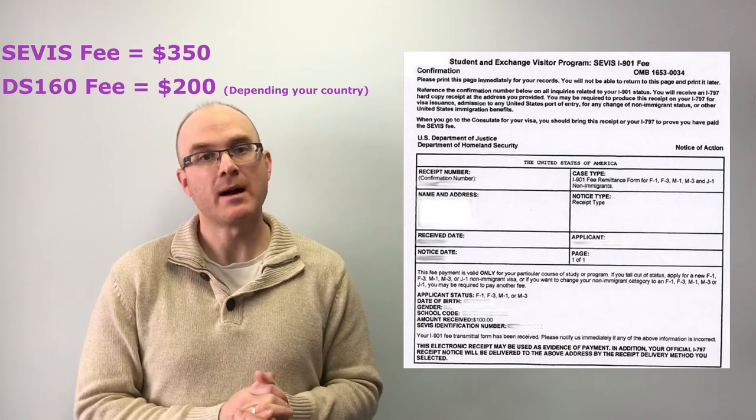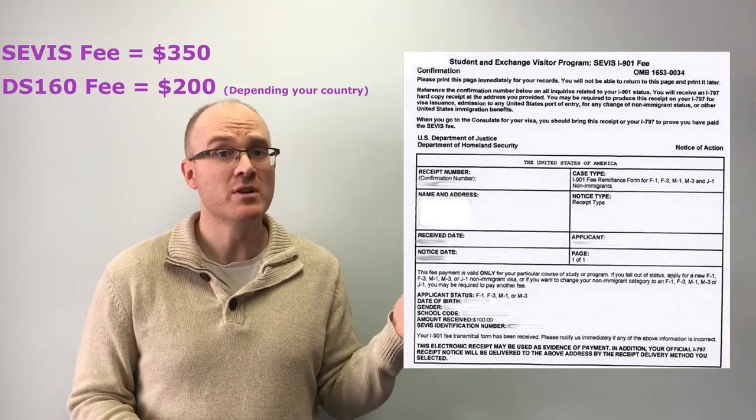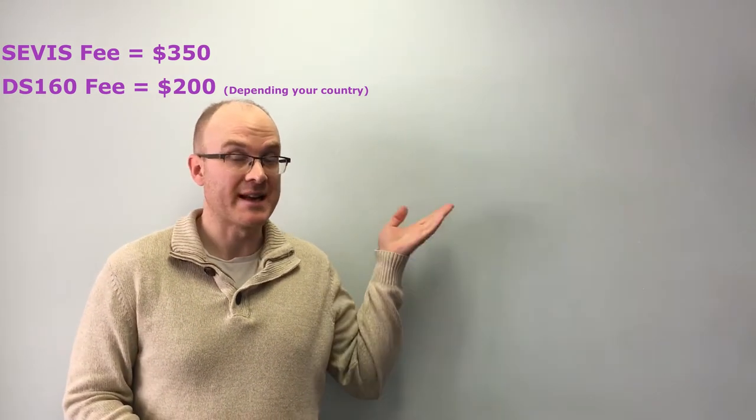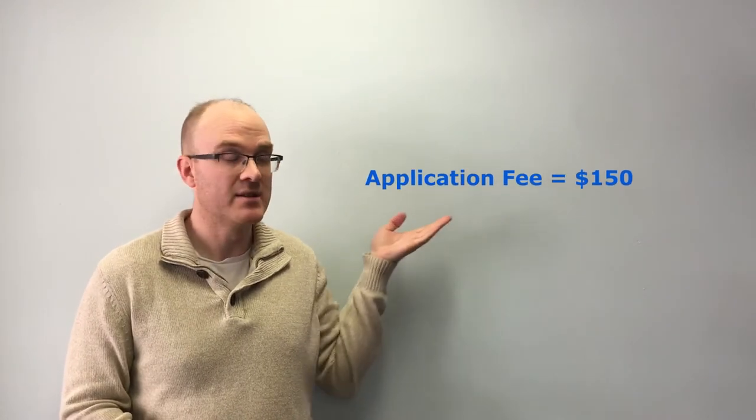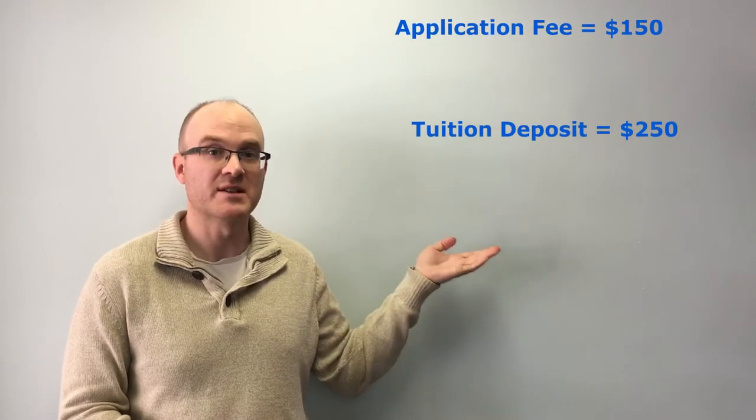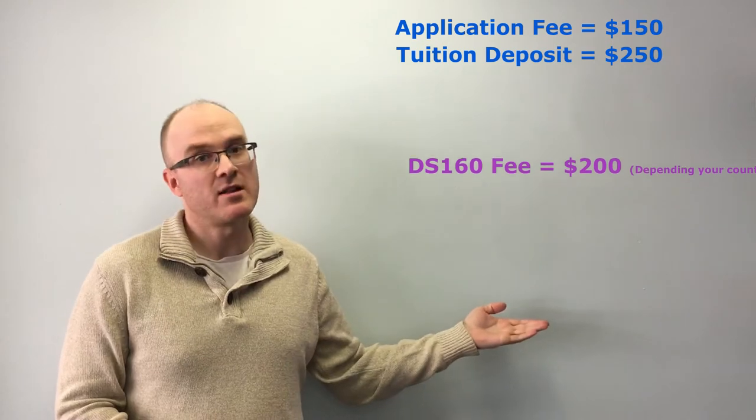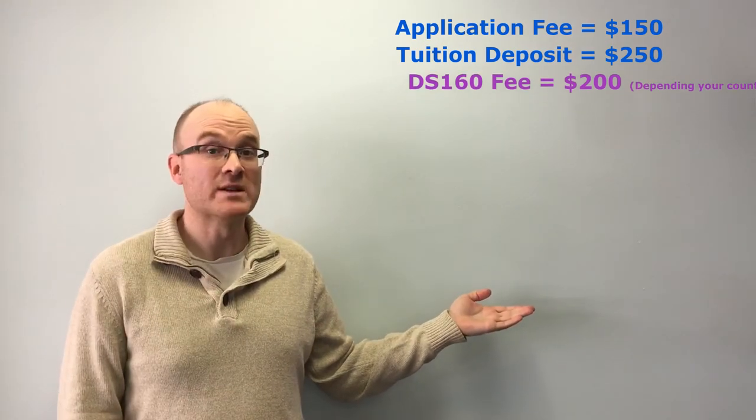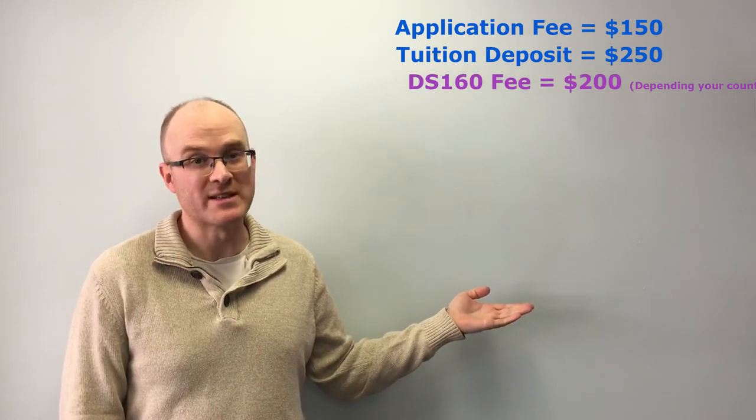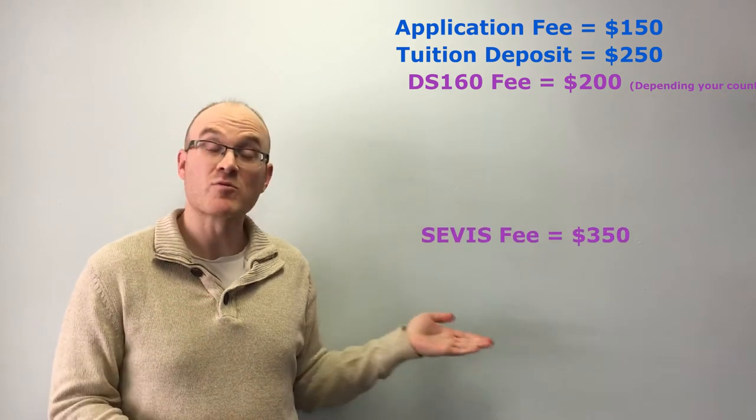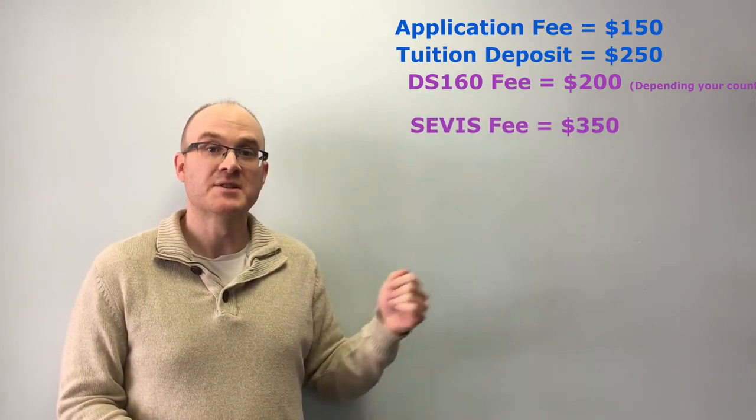So let's stop just for one second and review the different fees. So we said $150 application fee for ASC, $250 deposit, $200 more or less DS-160 fee. That's for the government, not for us. And a $350 SEVIS fee. Again, that's for the government, not for us.